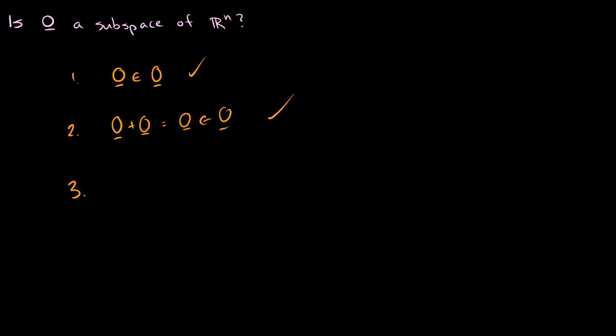For the third condition, we need to check scalar multiplication. C times zero is going to be the zero vector for any C, so it's also in our zero subspace. Therefore, {0} is indeed a subspace of Rn.